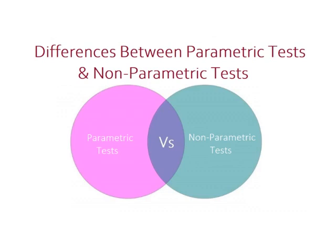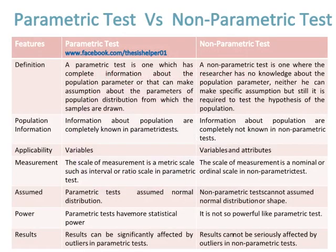Differences between parametric tests and non-parametric tests. A parametric test is one which has complete information about the population parameter, or that can make assumptions about the parameters of the population distribution from which the samples are drawn. A non-parametric test is one where the researcher has no knowledge about the population parameter, neither can they make specific assumptions, but it is still required to test the hypothesis of the population.